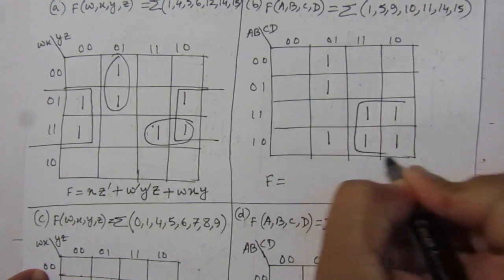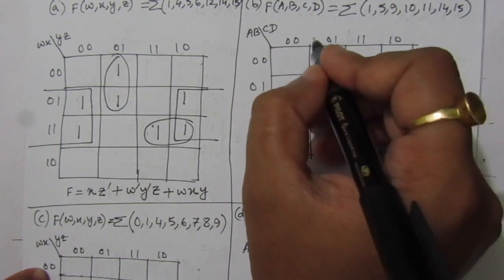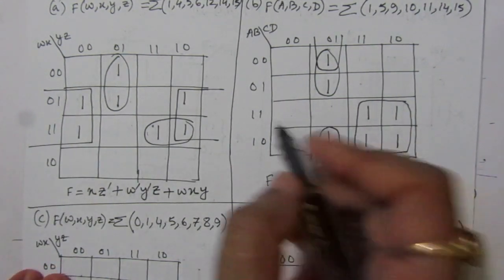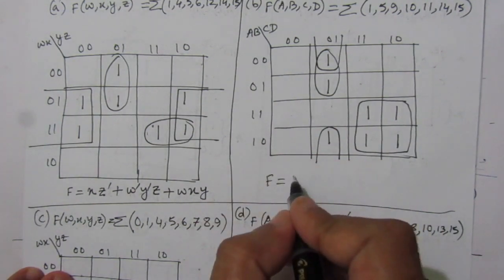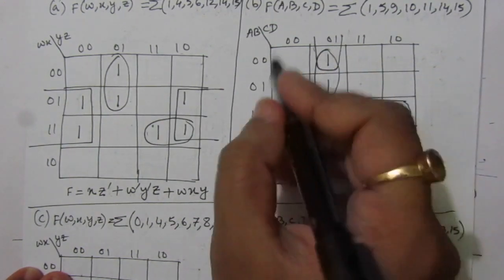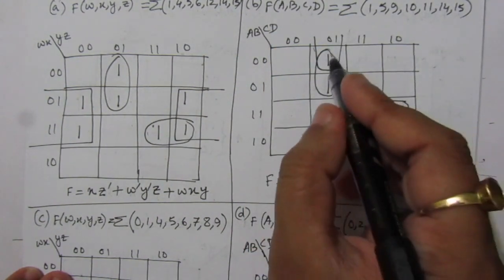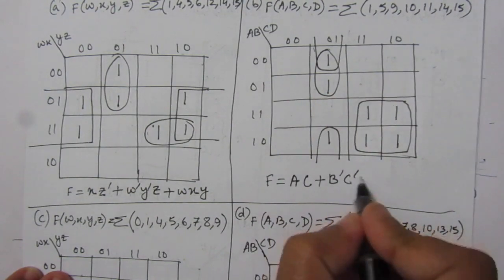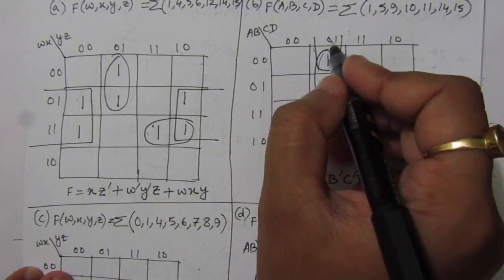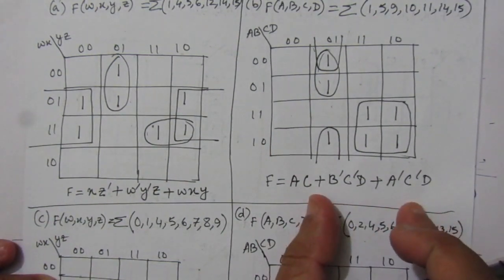Now we combine groups. The first term gives a from one side and c from the other, so ac. For the second term, the two columns give b̄, and from the other side we get c̄d, giving b̄c̄d. For the third term, we get ā from one side and c̄d from the other, giving āc̄d. The simplified Boolean expression for the second problem is ac + b̄c̄d + āc̄d.